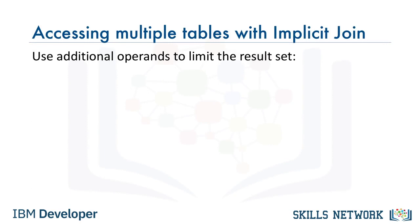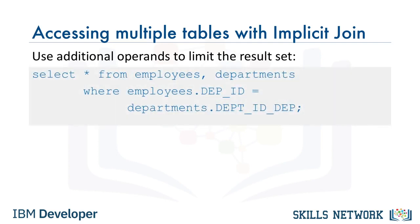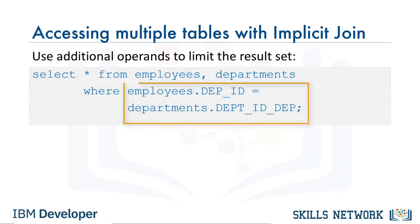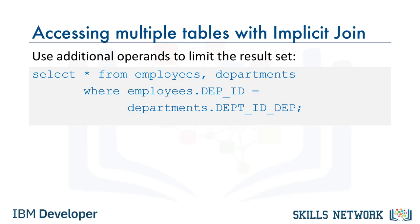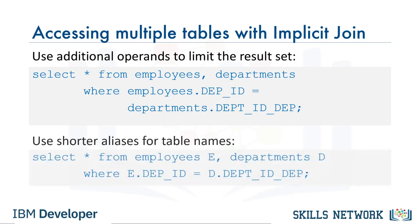We can use additional operands to limit the result set. Let's look at an example where we limit the result set to only rows with matching department IDs: SELECT * FROM employees, departments WHERE employees.department_ID = departments.department_ID. Notice that in the WHERE clause, we prefix the name of the column with the name of the table. This is to fully qualify the column name, since it's possible that different tables could have some column names that are exactly the same.